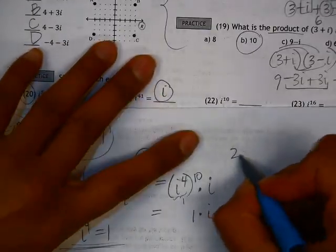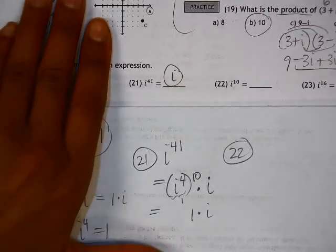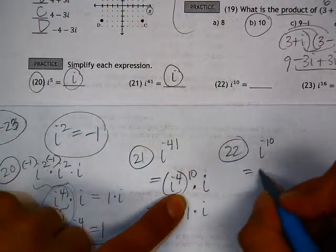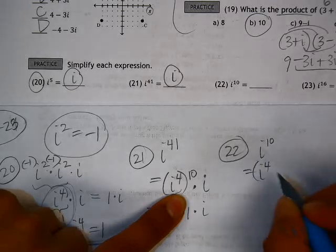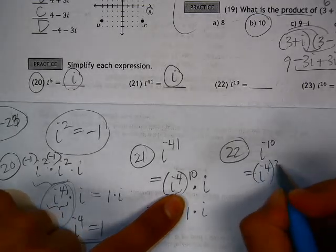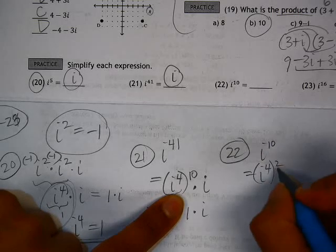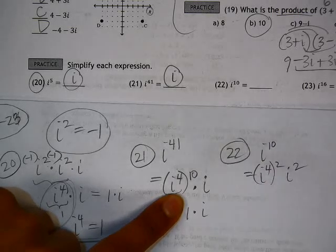Number 22. We have i to the 10th. Let's do it the same way we did this one. So i to the fourth, the number of times it goes into i to the 10th would be twice. This gives us i to the 8th. But then we have two more i's left. So we need two more i's, i squared.